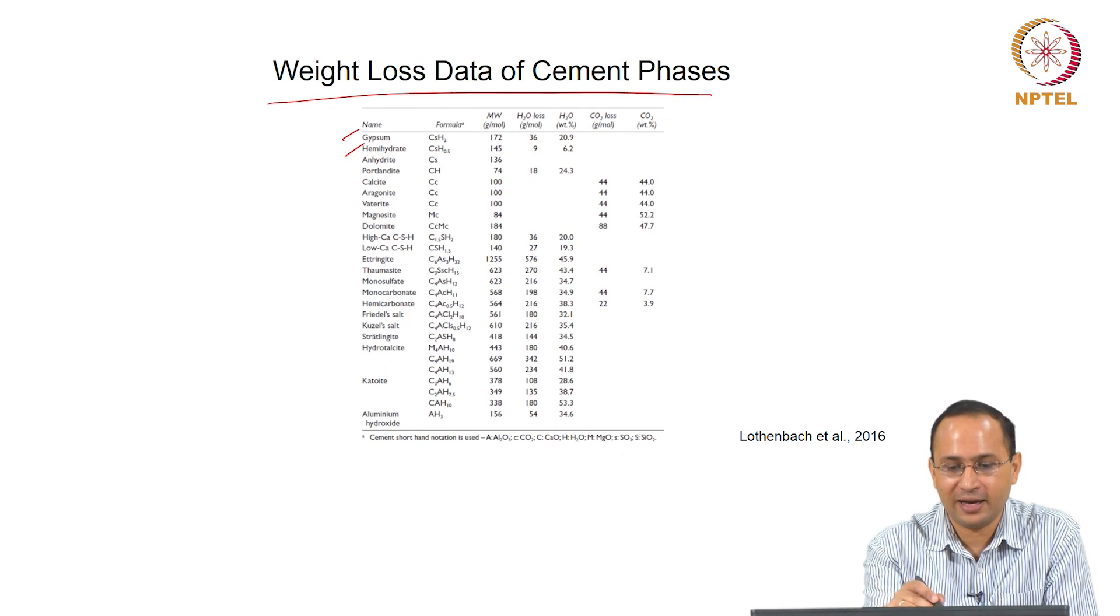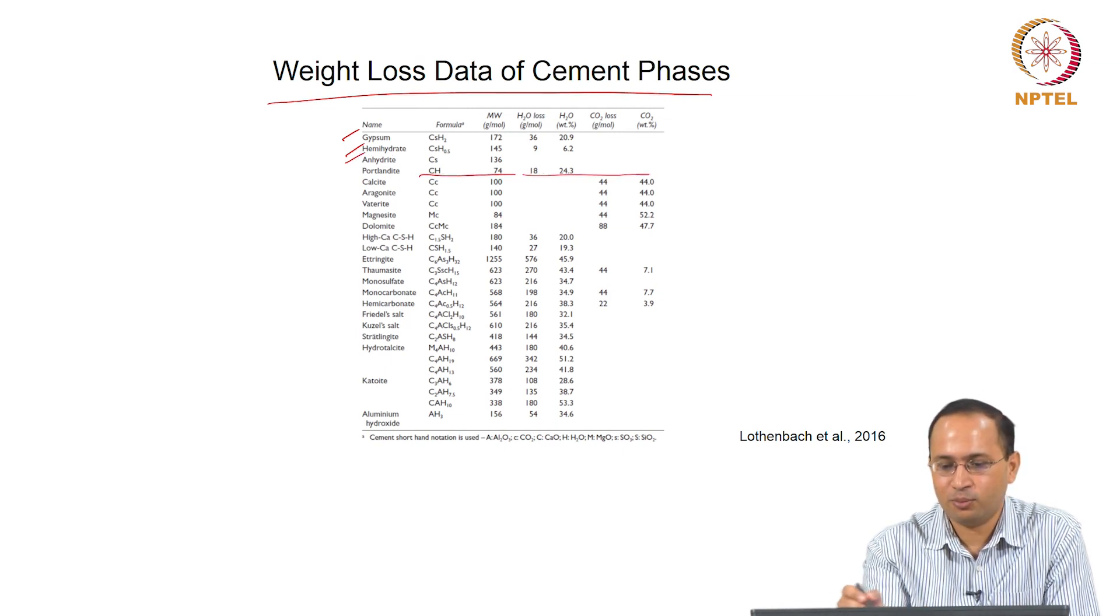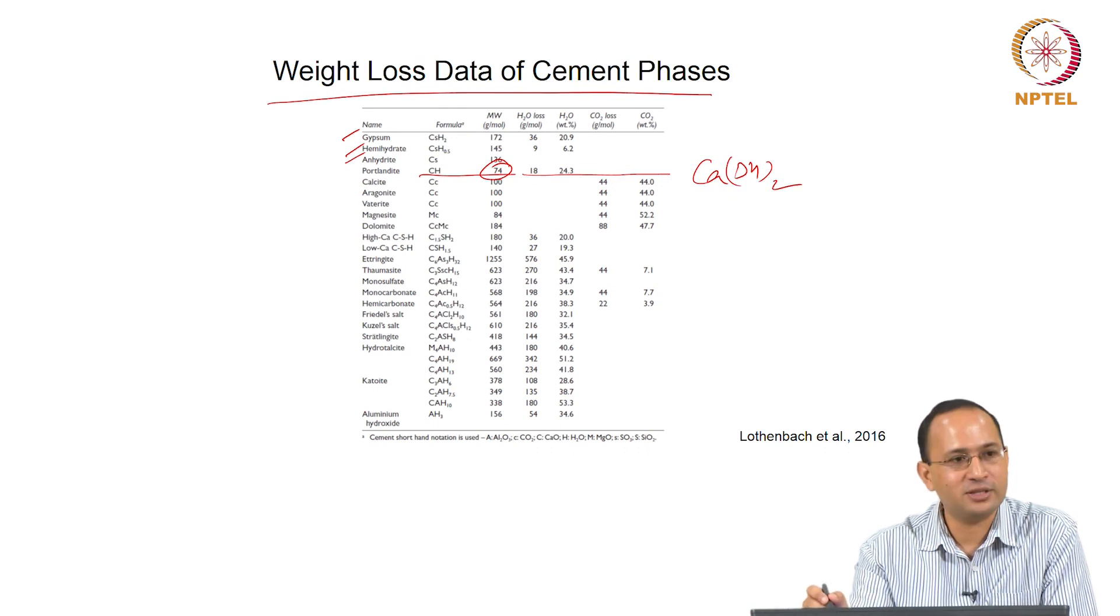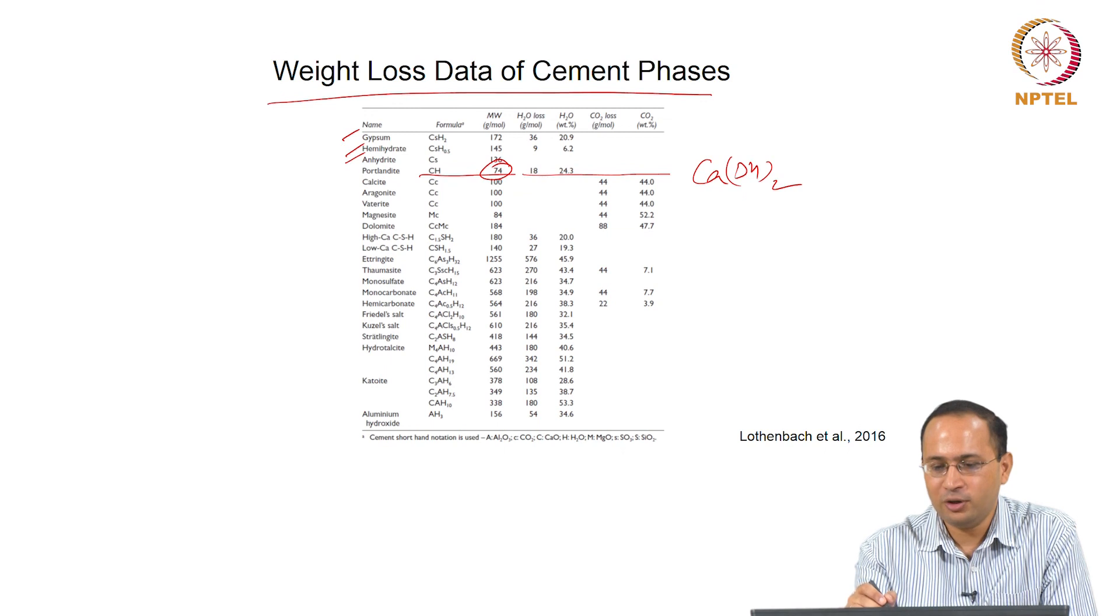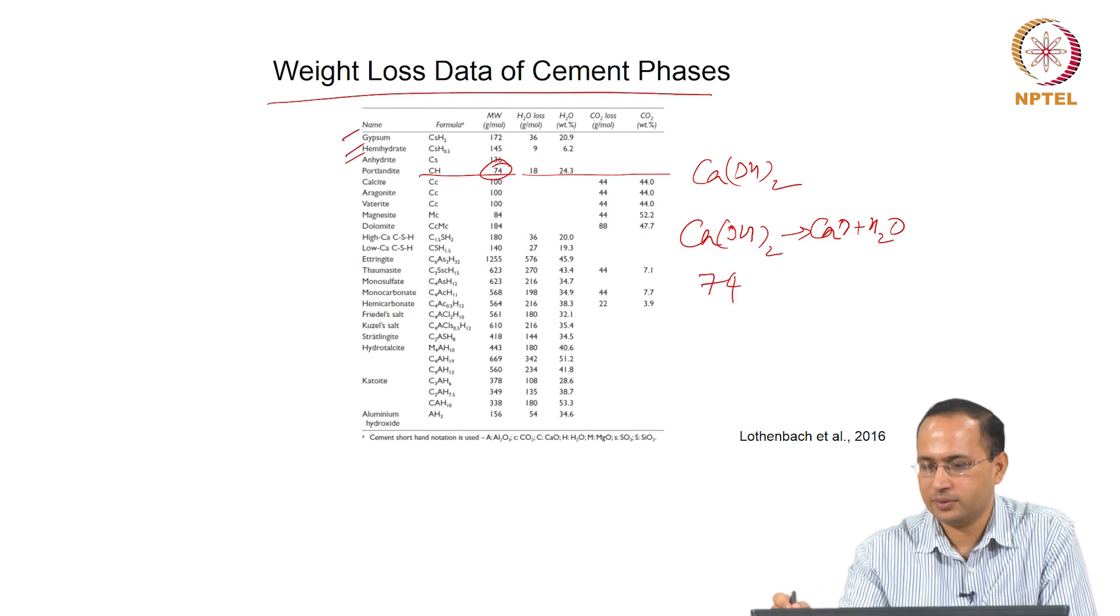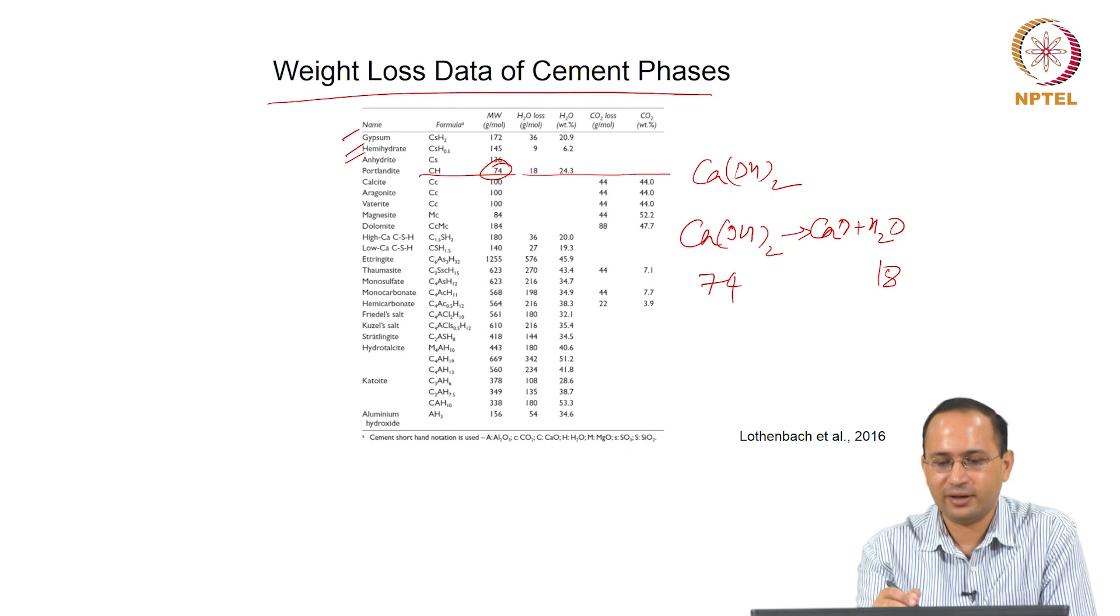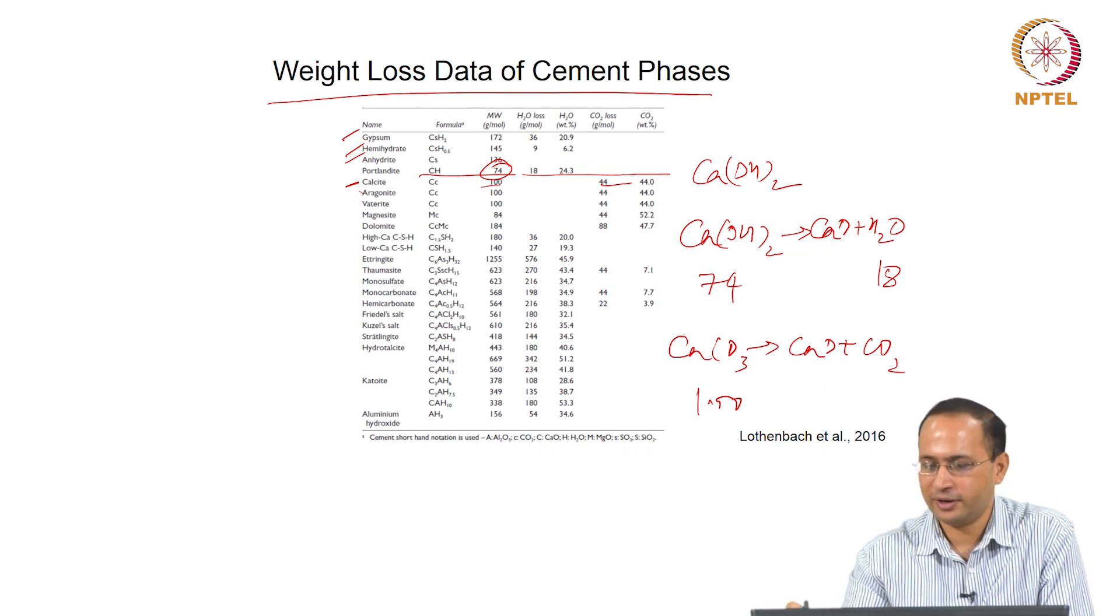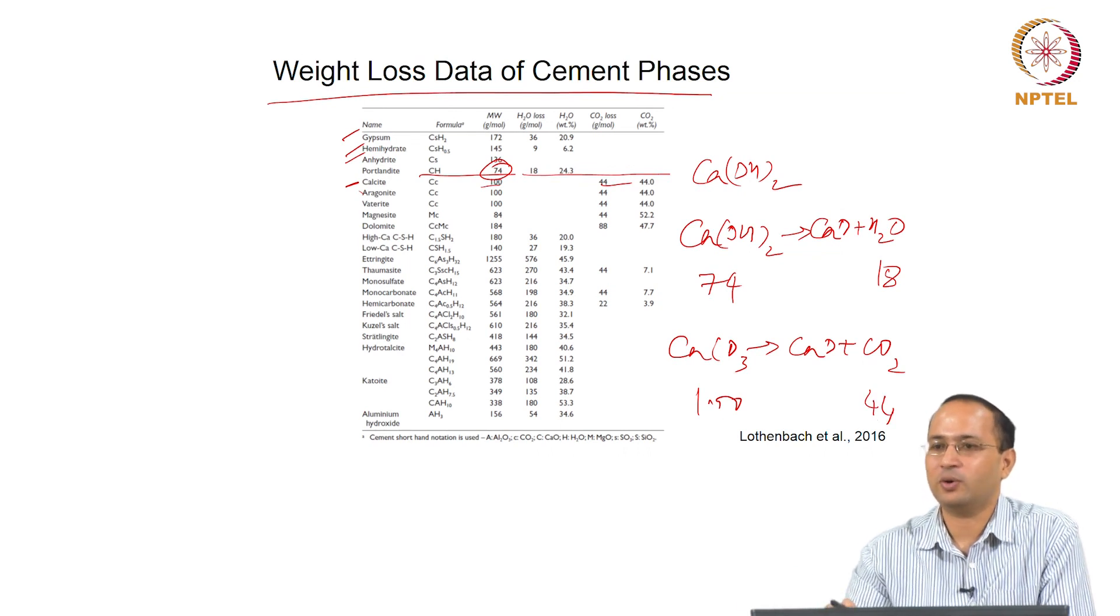Here is a table you can use for the weight loss. This is the weight loss data of cement phases: gypsum, hemihydrate, anhydrite. Let's look at portlandite. It gives you portlandite molecular weight is 74. How much water will you lose? 18 grams. So this is 74, this is 18. Similarly you can get it for calcite. This is 100. Calcium is 40, carbon is 12, O is 16 - you can calculate the molecular weight. And this is 44. We will use this information to quantify the amount.